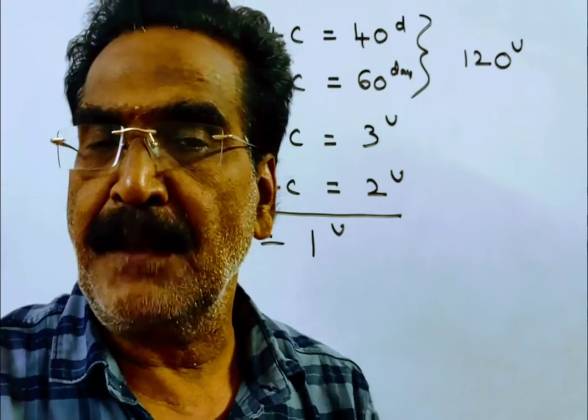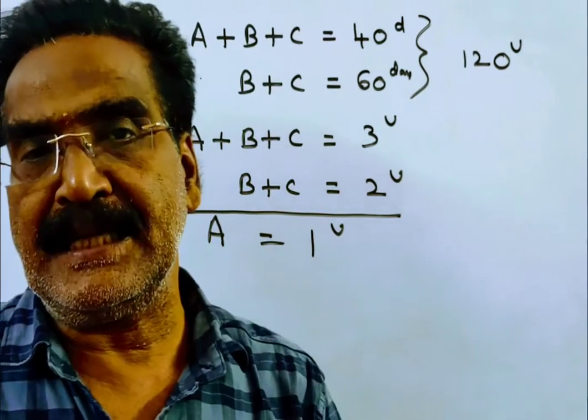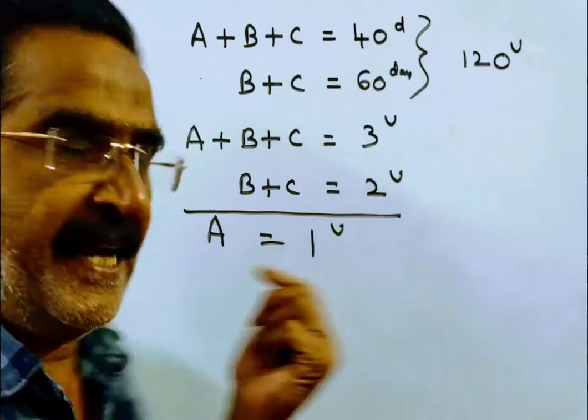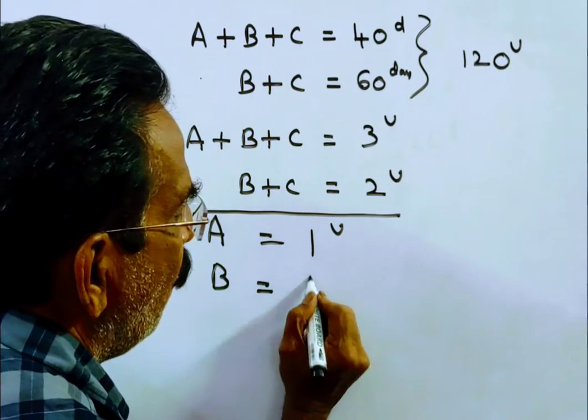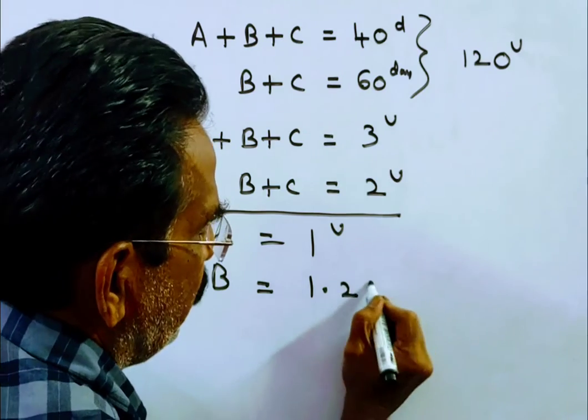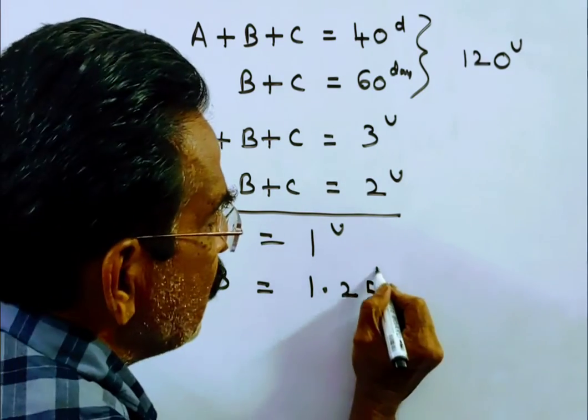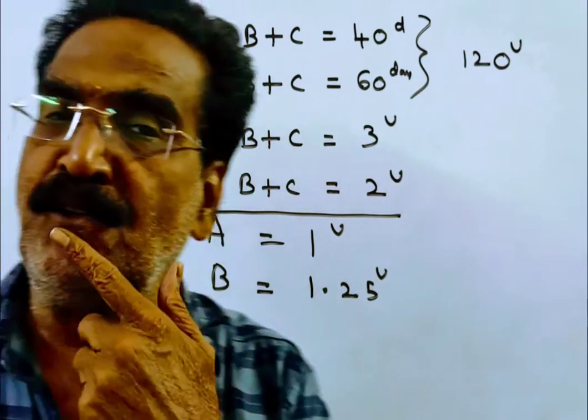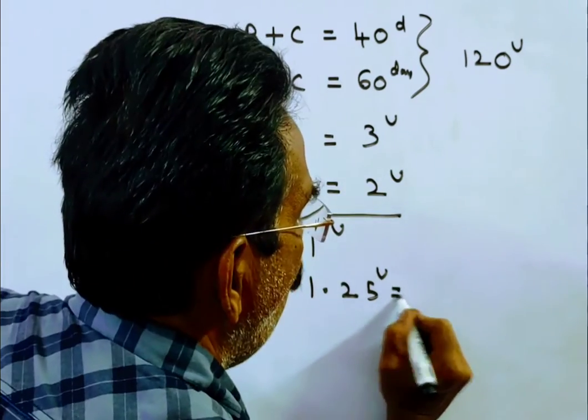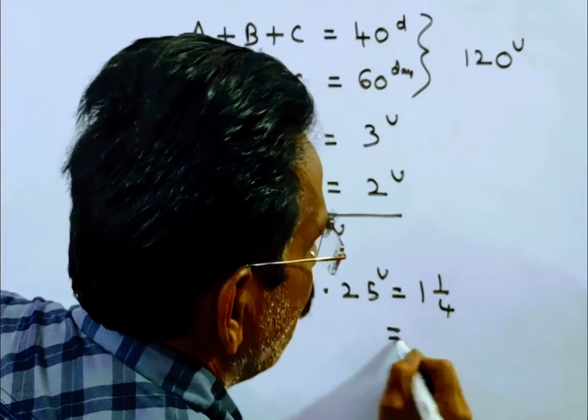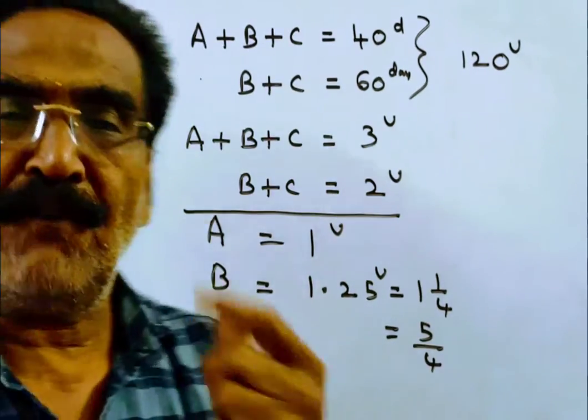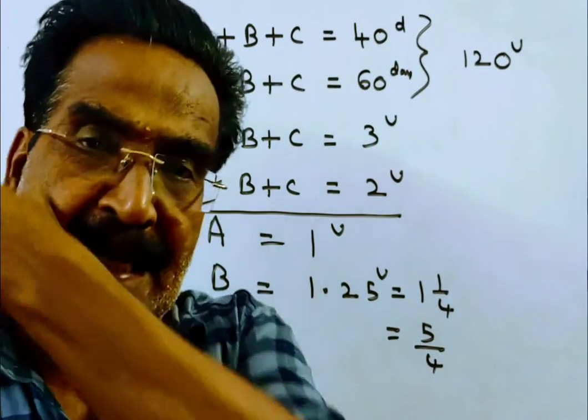It is given that B is 25% more efficient than A. So then B can do 1.25 units, 25% more. So B can do 1.25 units, that is equal to 1 and 1 by 4, which equals 5 by 4 units. B can do 5 by 4 units work per day.